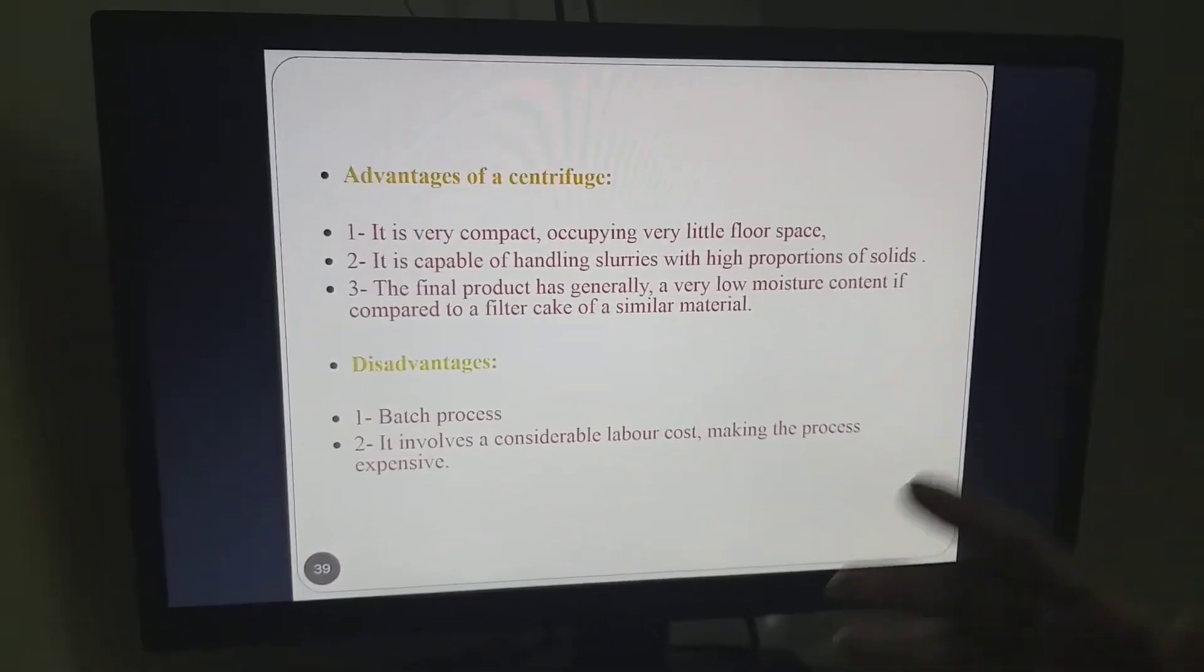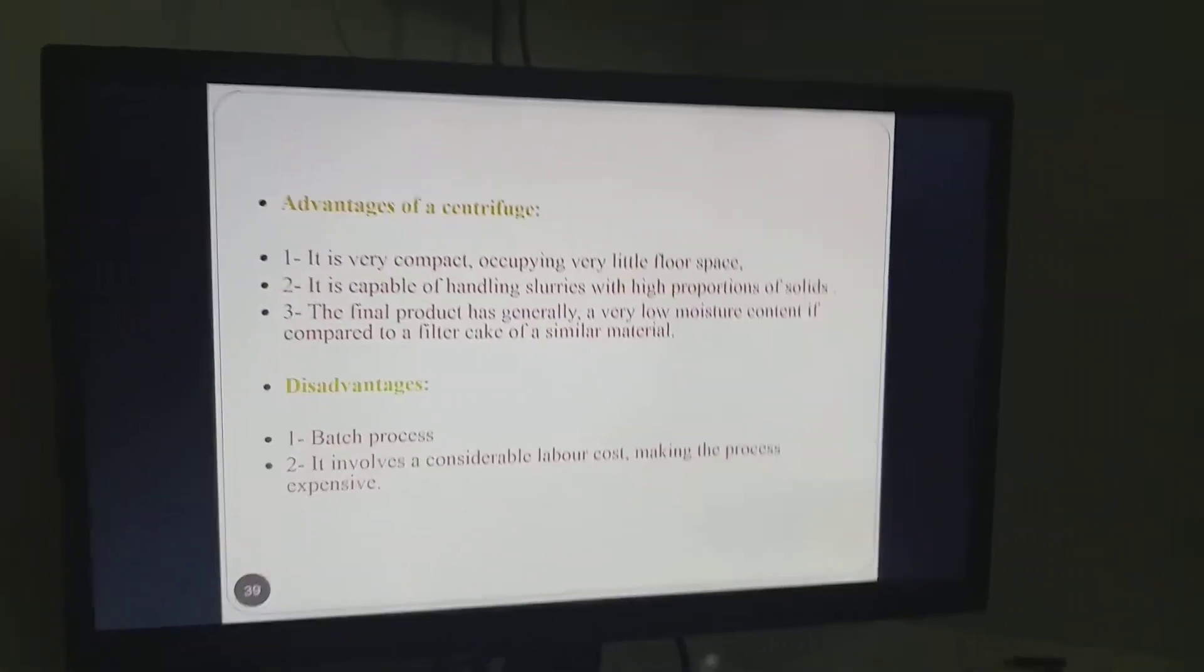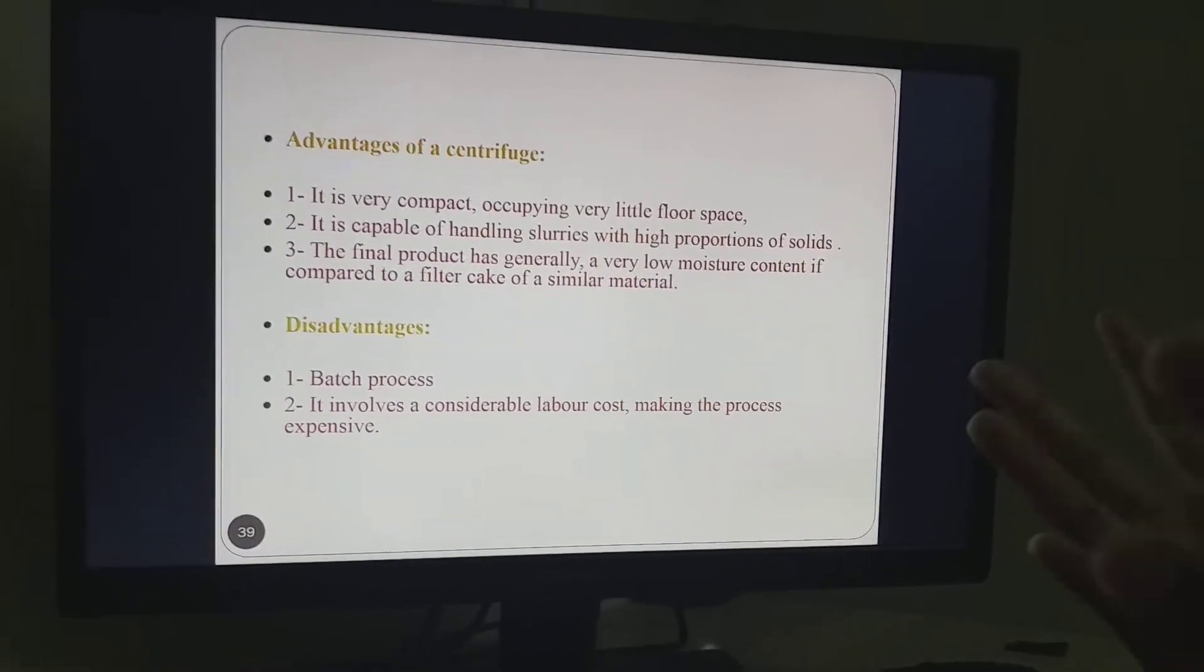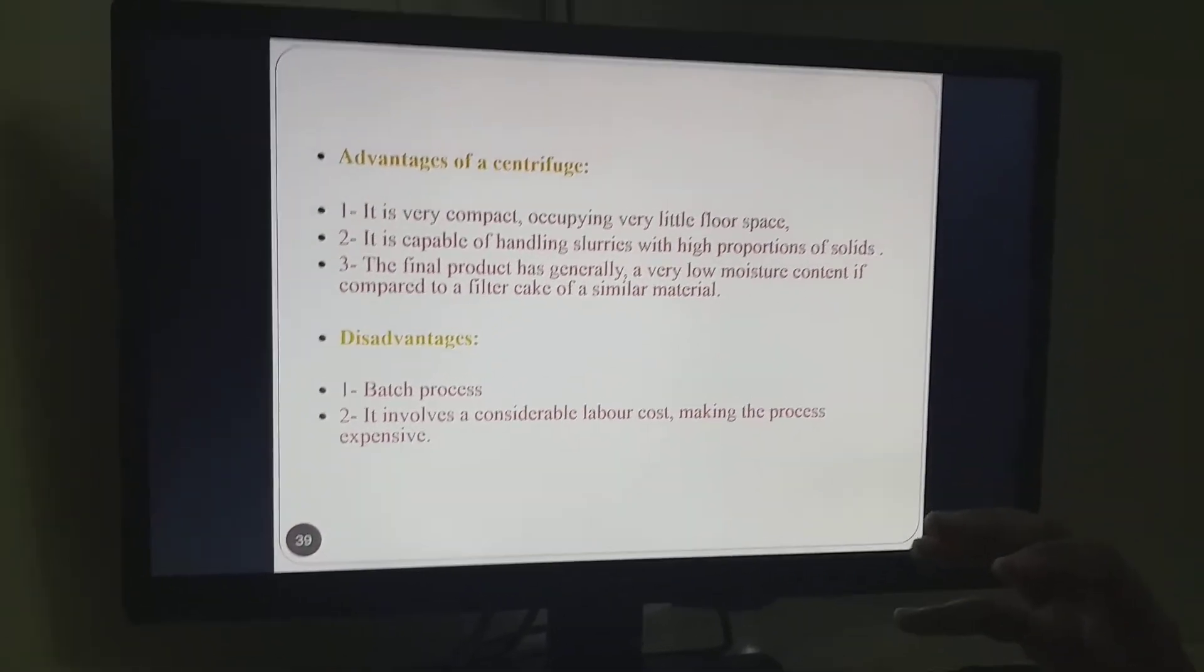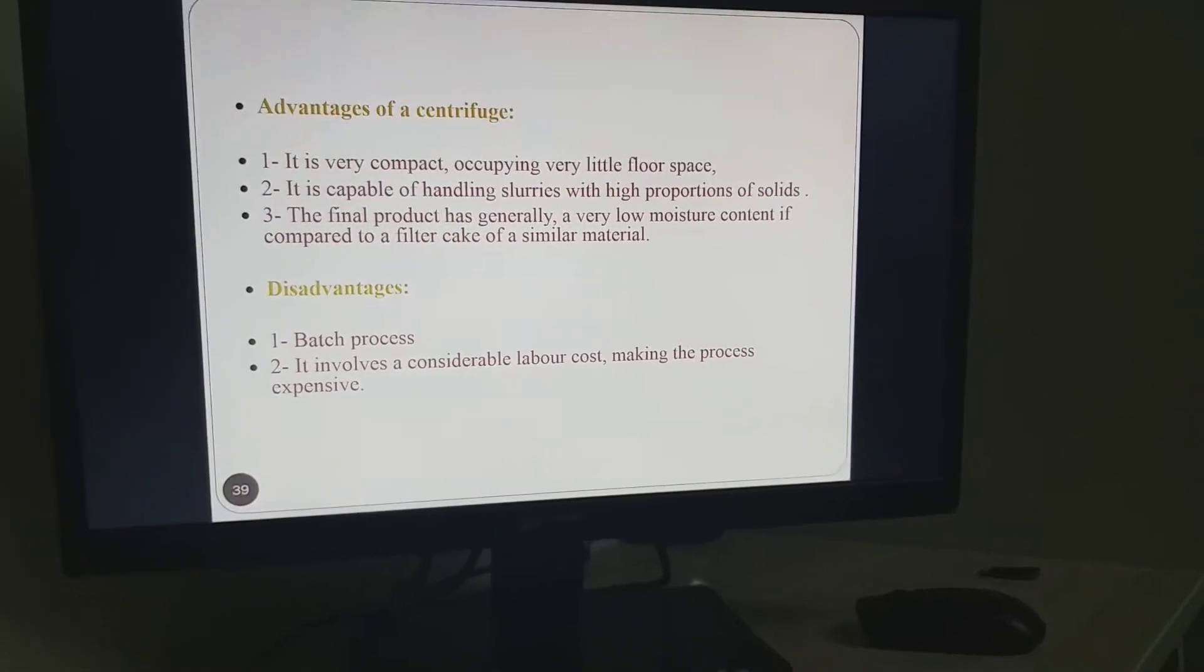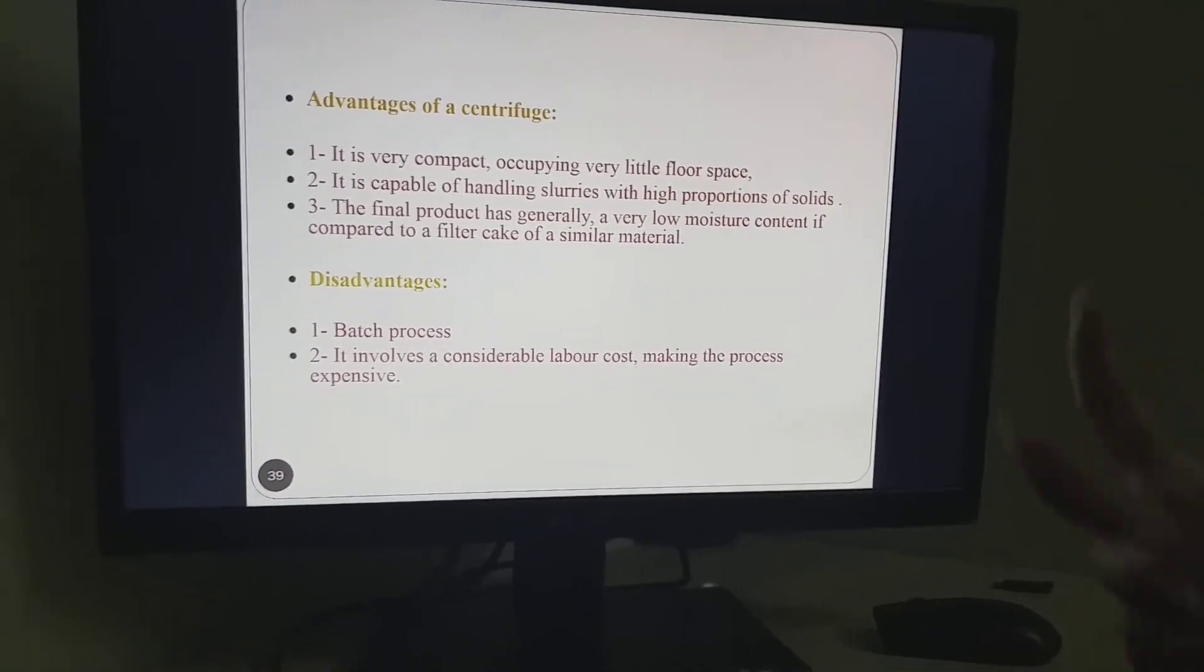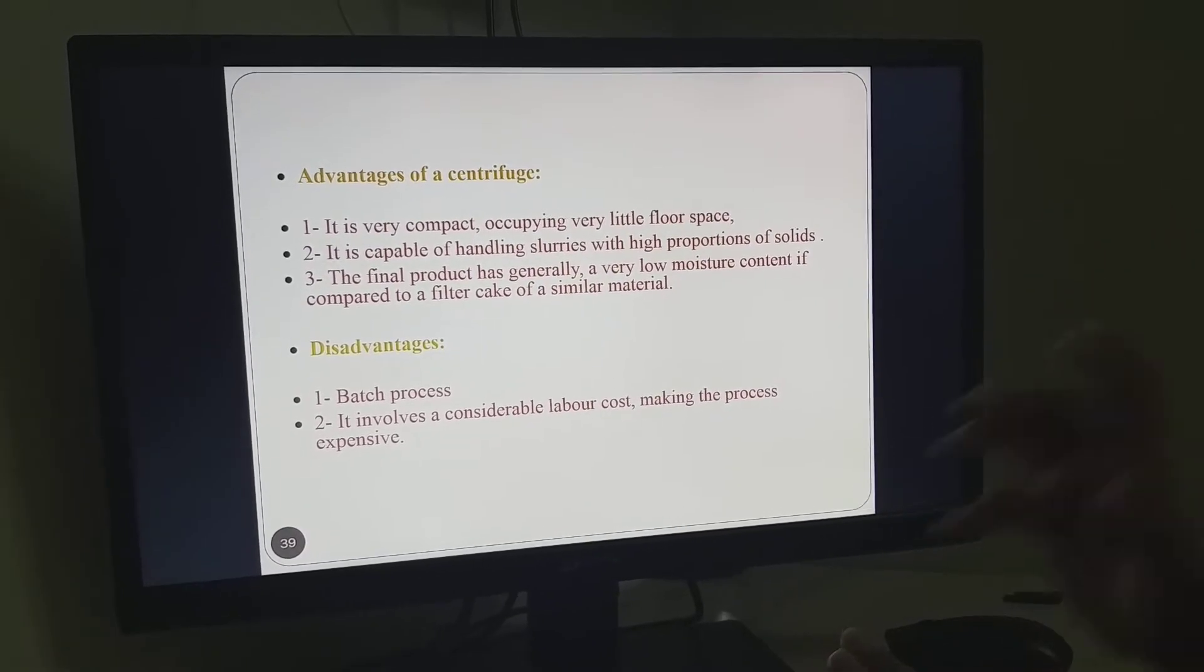Talking about its advantages: It is very compact, occupying very little space. Space required for plate and frame and rotary vacuum is too large, but the space requirement is very less. It is capable of handling slurry with high properties of solids, meaning higher density or concentration. The final product has generally very low moisture content compared to other filter type equipment, producing a fairly dry cake that saves drying time.